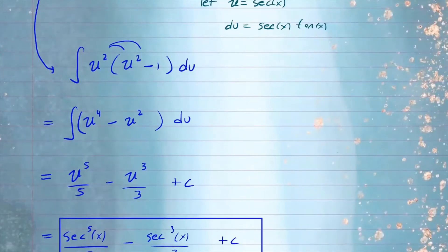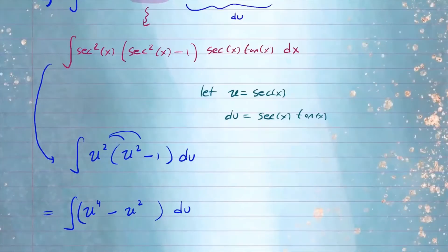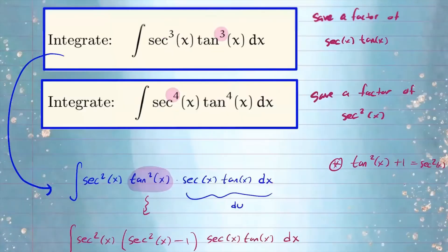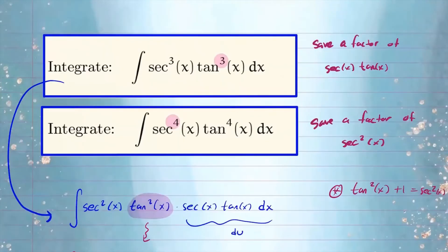So that's how we integrate something like this. If you have secant and tangent where the tangent power is odd, save a factor of secant tangent and then rewrite the integral. Now let's go ahead and try the second problem.